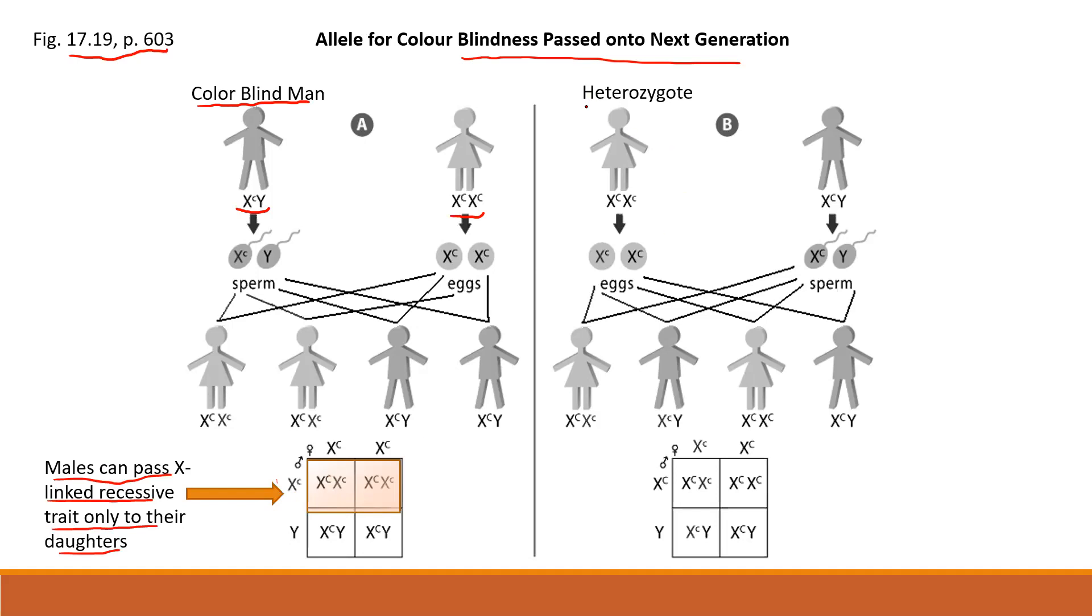How about if we have a heterozygote female and a normal male? She has one recessive trait. Half her eggs are going to have the recessive trait, so heterozygote females have a 50 percent chance of passing the recessive allele to the child. Notice here that one of them is going to have colorblindness.